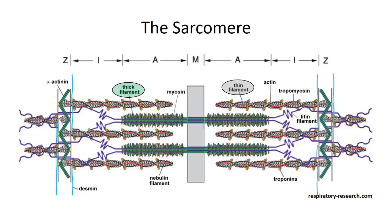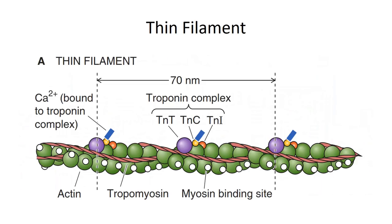Both types of filaments are held in place by separate scaffolding proteins. The proteins supporting the thick filament are found in the center of the sarcomere, a region known as the M-line. Proteins supporting the thin filaments are found in the Z-disc region on either side of the sarcomere. By convention, each Z-disc represents the boundary between adjacent sarcomeres. The backbone of the thin filament is the actin molecule — a globular protein that polymerizes into a double-stranded helix. Each actin monomer contains a binding site for interacting with myosin during a muscle contraction.